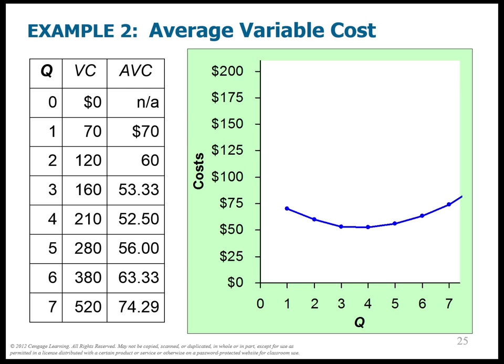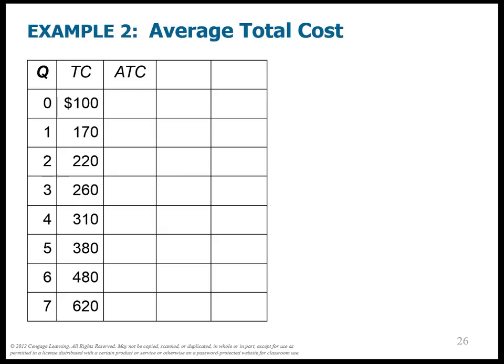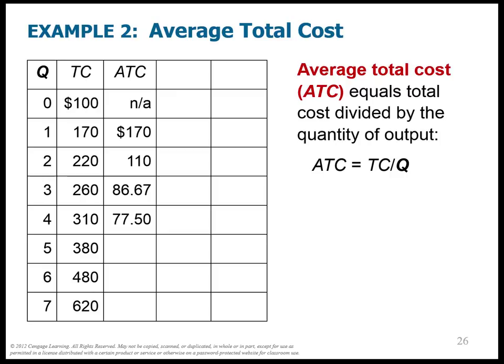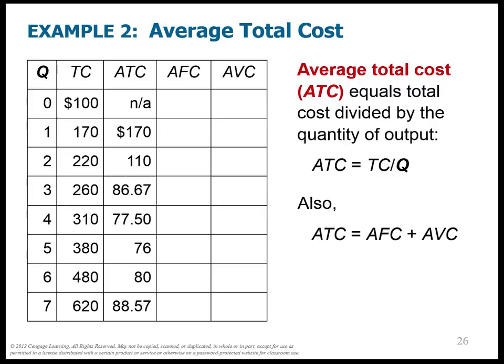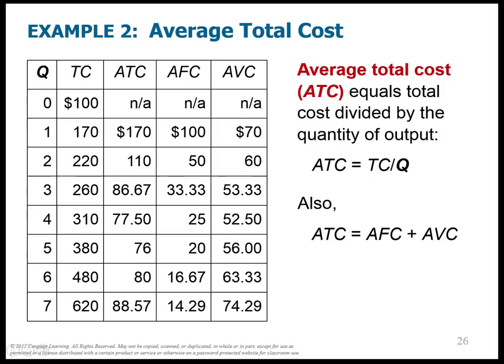Average total cost is just the total cost divided by Q. There's also an easier way to calculate it: take the average fixed cost plus the average variable cost, and this gives you the average total cost. So I can add those two columns together at any point to get the average total cost. Use whichever formula is easier.